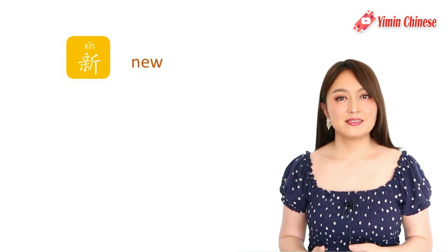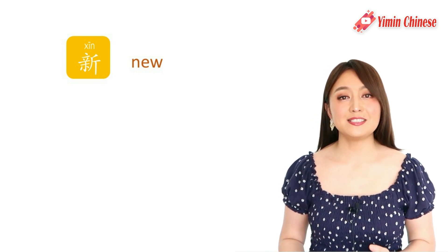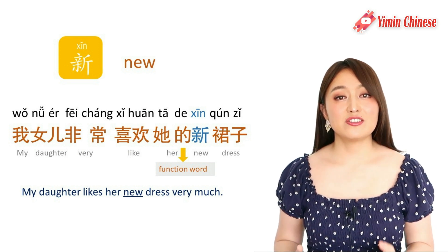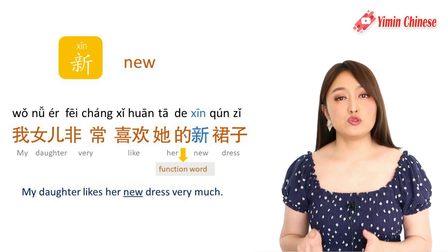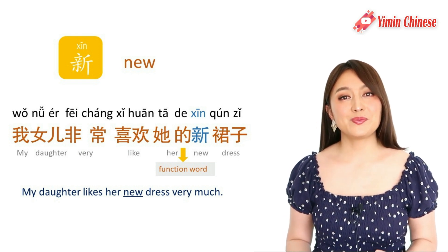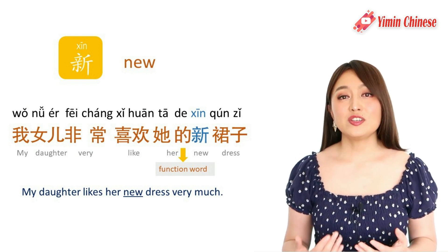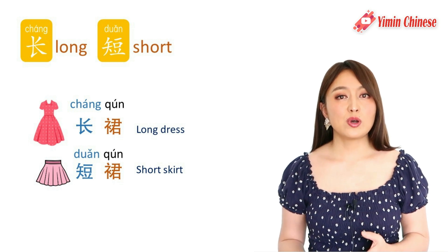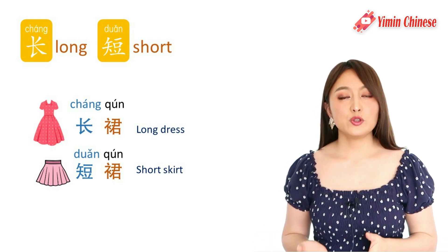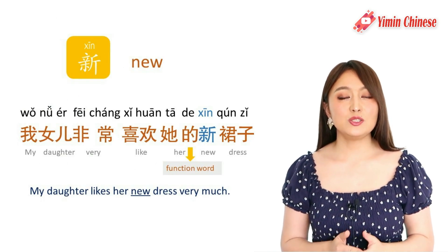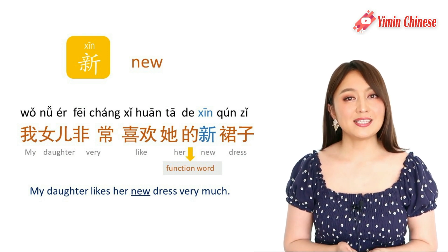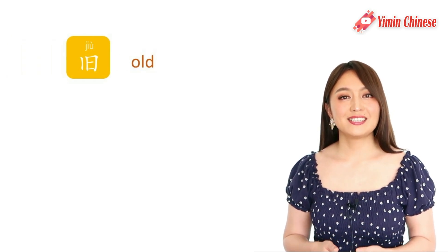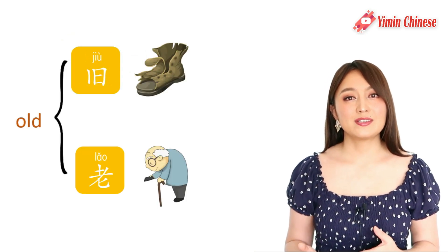Our next word is 新 — new. For example: 我女儿非常喜欢她的新裙子 — My daughter likes her new dress very much. Note that 裙子 can mean either dress or skirt. If you don't specify 长裙 or 短裙, it could be either.